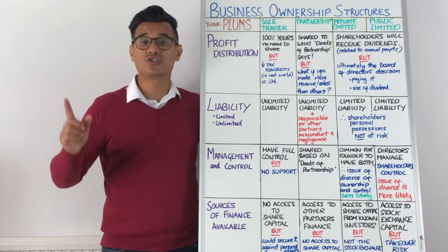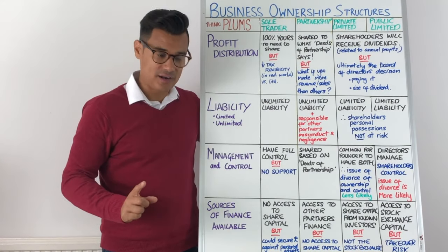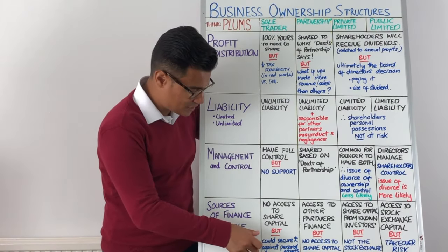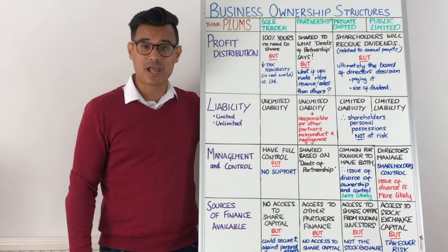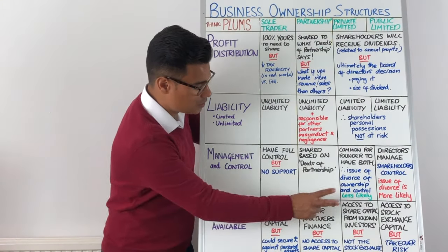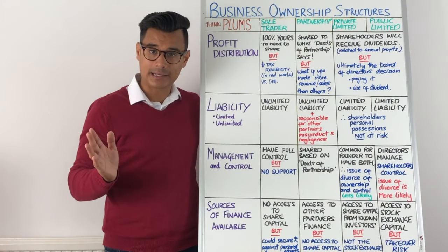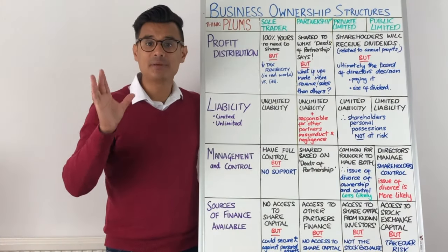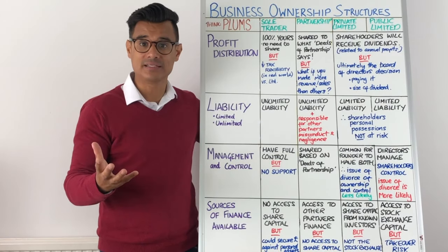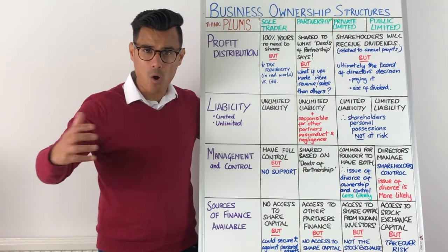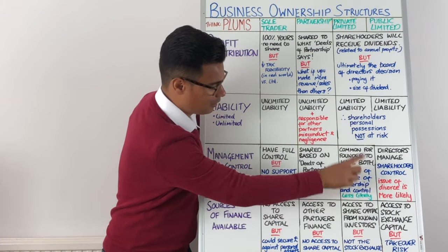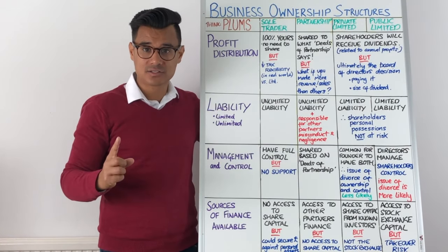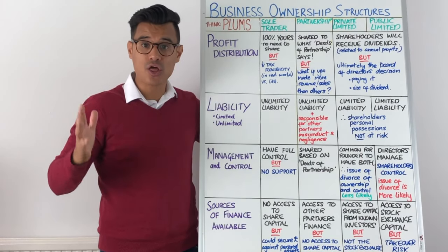In the case of partnerships, you're going to have access to your finance and other partners' finance. But it's worth remembering you're still an unincorporated organisation, and therefore you're going to have no access to share capital. In the case of private limited companies, because you're a company you're going to have access to share capital, but it's got to be from known investors — not the stock exchange. The stock exchange is what public limited companies have access to in order to generate enormous finance. So public limited companies can generate massive amounts of finance there, but there is always a risk of a takeover because you are on the stock exchange.